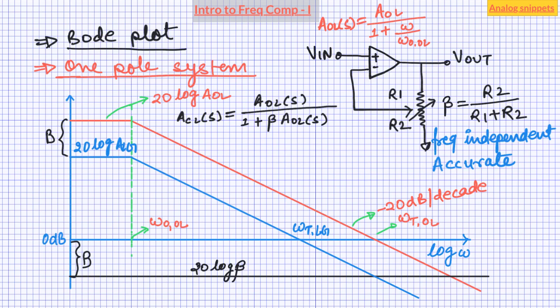The amount of feedback starts to make a difference when it makes the loop gain higher than 1 — in other words, when the loop gain plot crosses the 0 dB line. Notice that only if loop gain and beta are known, we have all the necessary information to derive the closed loop gain. A Bode plot is in reality a collection of two plots: the gain plot and the phase plot. So let's turn our attention to the phase plot.